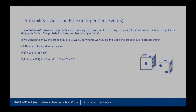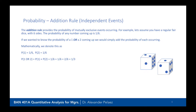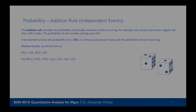The addition rule provides the probability of mutually exclusive events occurring. For example, with a fair six-sided die, the probability of any number coming up is one-sixth. If we want to know the probability of rolling a one or a two on a single die, we simply add the probabilities: one-sixth plus one-sixth equals two-sixths, or one-third.